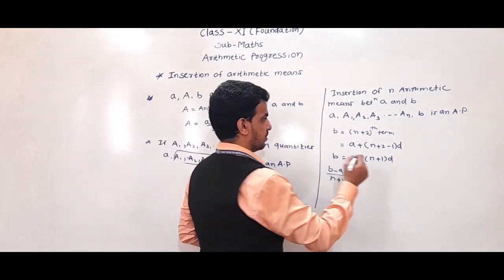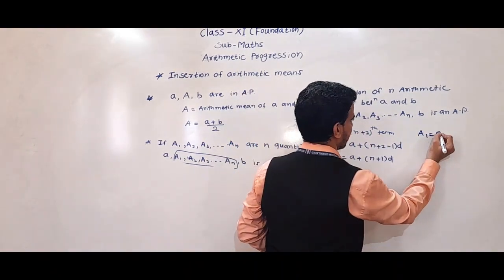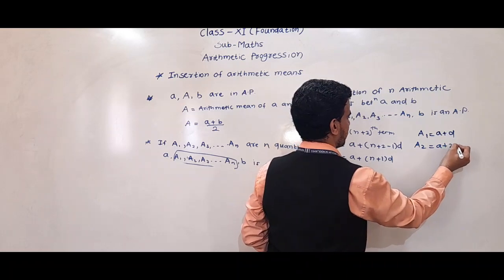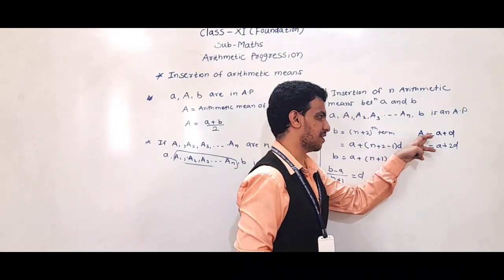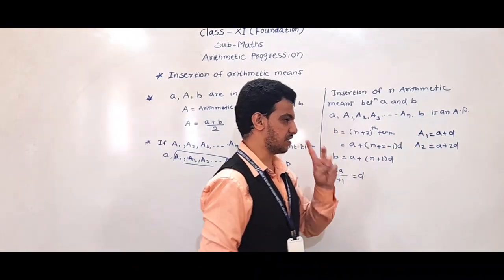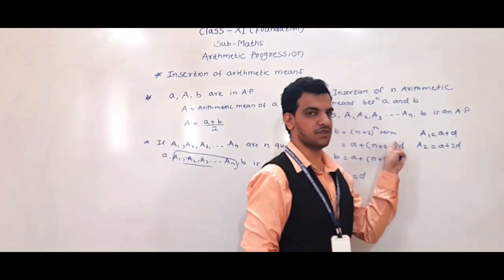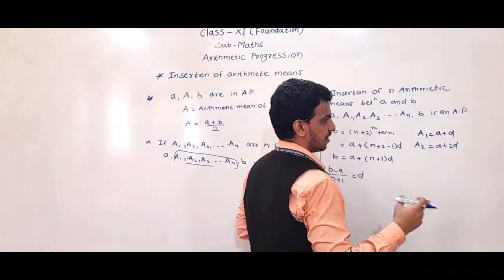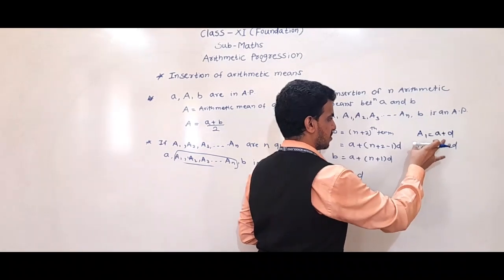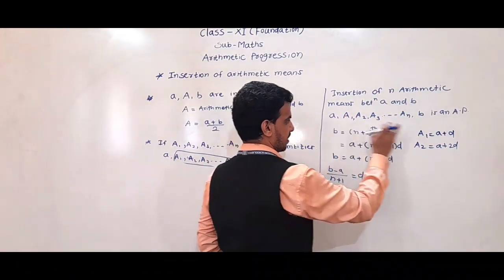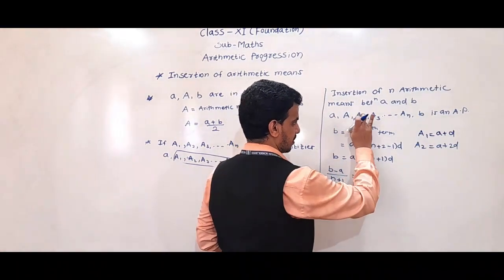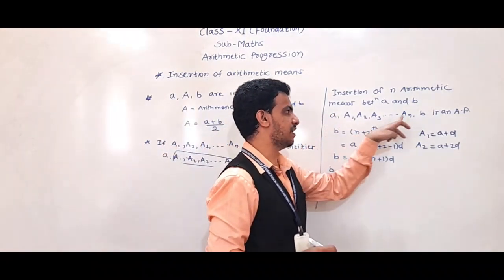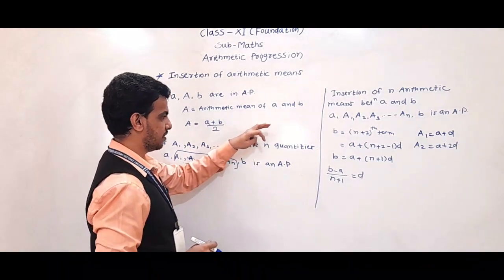Note that A1 is the second term of the AP, so A1 = a + d. A2 is the third term, so A2 = a + 2d, and so on. These are the N arithmetic means. Now we will take an example based on this to understand how to insert arithmetic means.